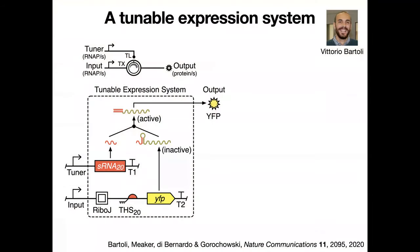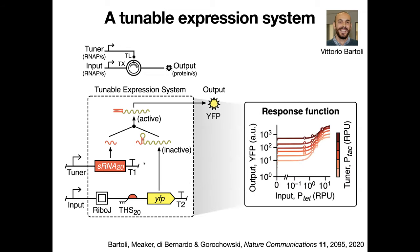One of my students, Vittorio Bertoli, developed what he called a tunable expression system, where the amount of protein produced for a given transcriptional signal could be regulated by a secondary tuner input. This device works by using a toehold switch that allows the translation rate of the protein to be governed by the expression of a small trigger RNA. When tested in E. coli, he was able to show that he could easily amplify or suppress the input-to-protein relationship over several orders of magnitude, making it a really flexible system for tuning gene expression.